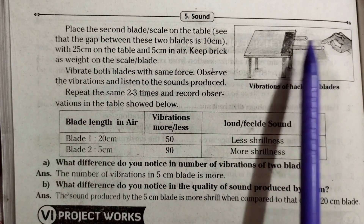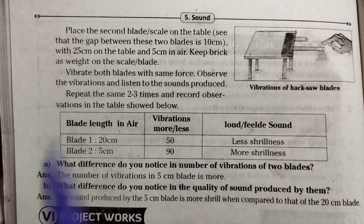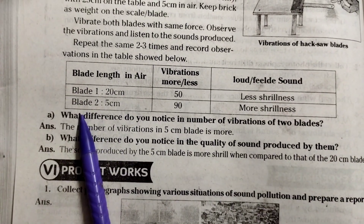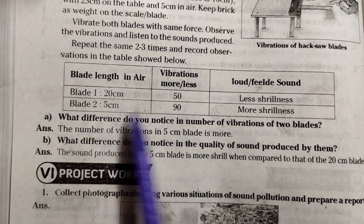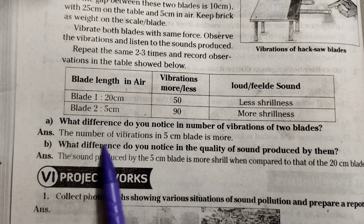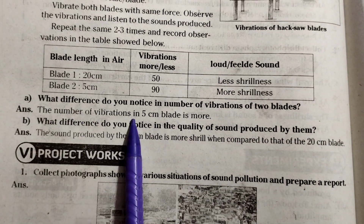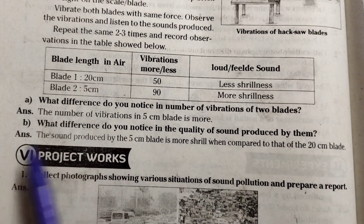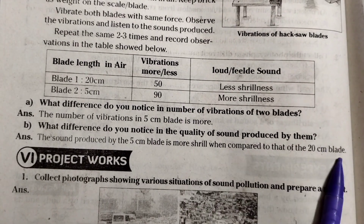One scale has more of its length in the air; the other has less in the air. Vibrate and observe. Observations: Blade 1 — 20 cm in air, 50 vibrations, less shrillness. Blade 2 — 5 cm in air, 90 vibrations, more shrillness. The number of vibrations in the 5 cm blade is more. The sound produced by the 5 cm blade is more shrill compared to that of the 20 cm blade.